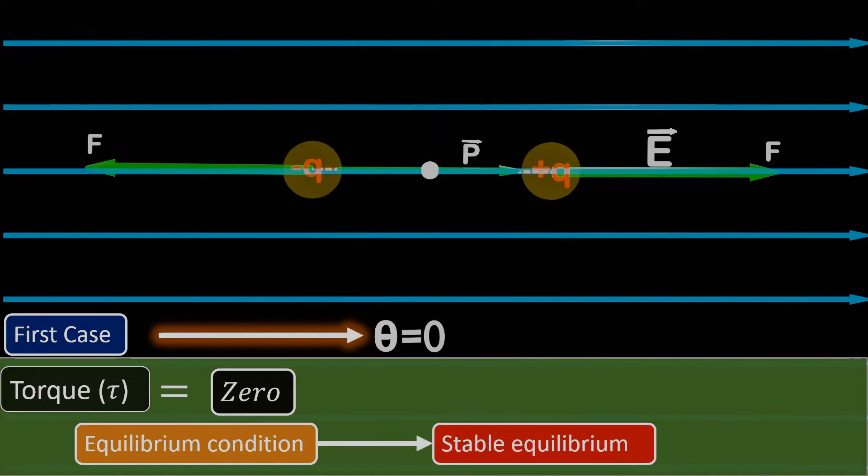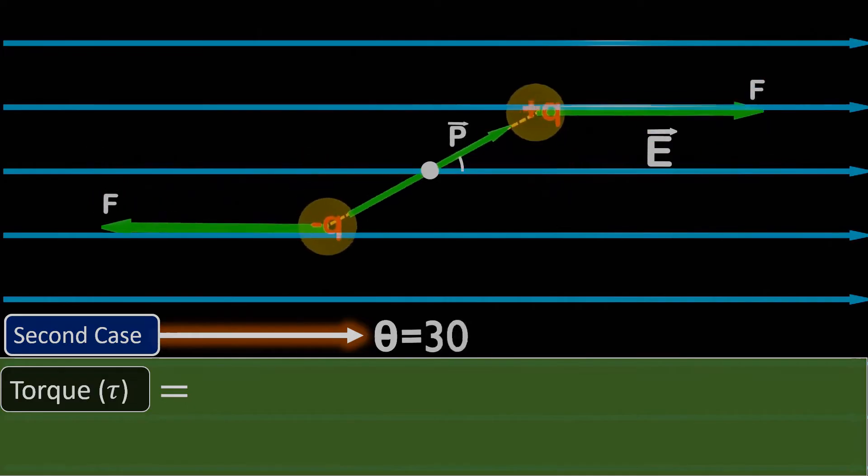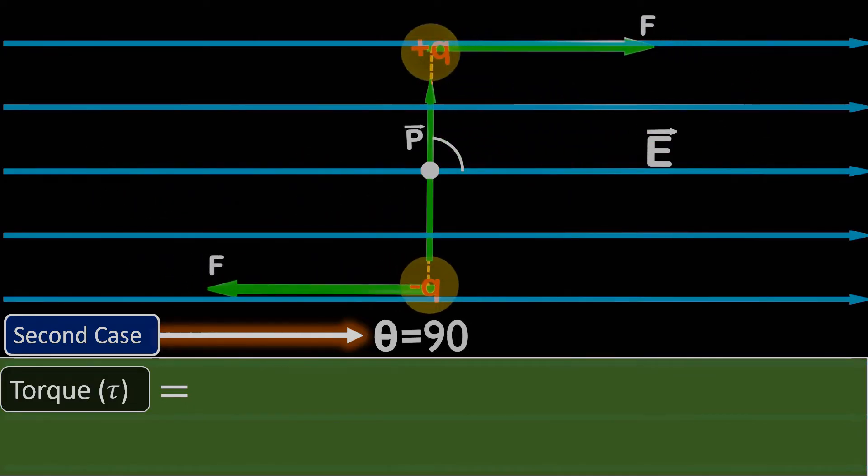Now let's move on to the second case, where the dipole is placed perpendicular to the electric field. Here theta is equal to 90 degrees. Therefore, the formula for torque will be PE sin 90. As sin 90 equals to 1, in this case, the torque simplifies to PE.